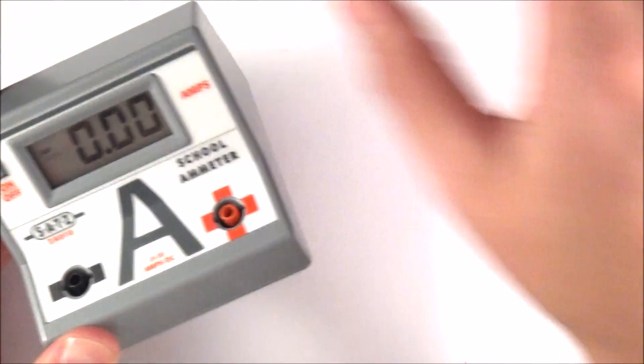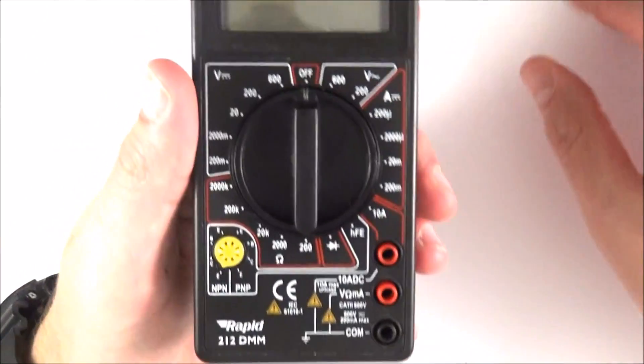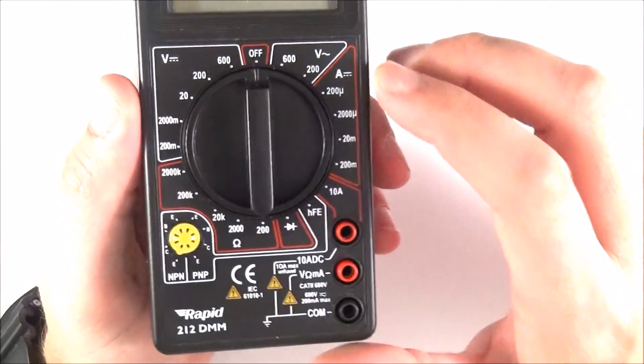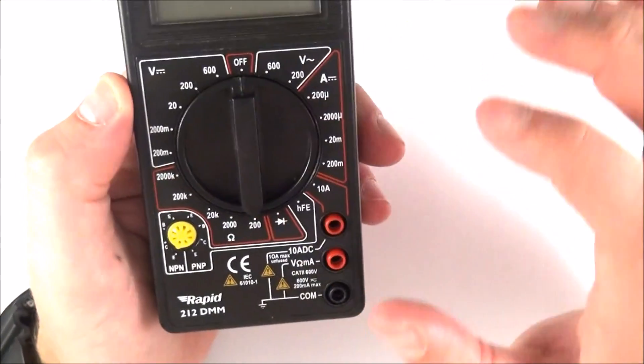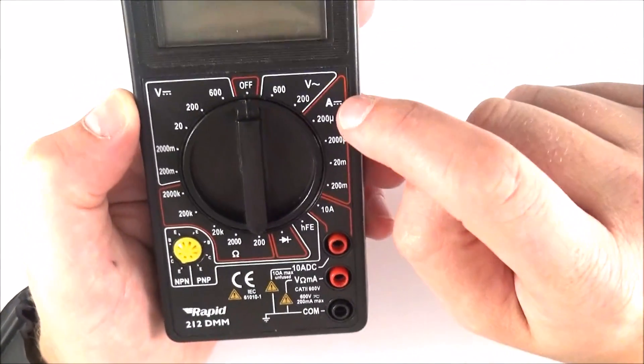For that reason, what we often use is something called a multimeter. Now a multimeter, and this is just a common example of one which I've seen in quite a few different classrooms, but you might have something different at your school. But the advantage of this is that it allows you not only to measure the potential difference in an AC circuit, which we don't really do that much, but it allows you to look at a whole different range of potential differences for a DC circuit.